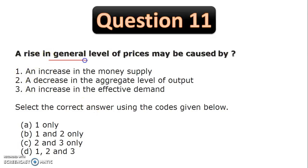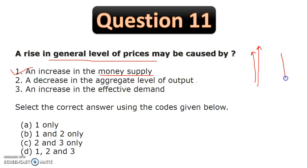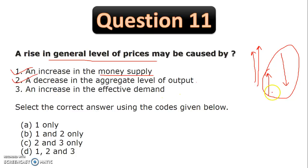A rise in the general level of prices may be caused by: (1) an increase in money supply — correct, because more money supply leads to inflation; (2) a decrease in the aggregate level of output — correct, because if production decreases, fewer products are available, demand rises, and prices rise; (3) an increase in effective demand — correct, because higher demand leads to price rises. All three statements are correct, so the right answer is D: 1, 2, and 3.